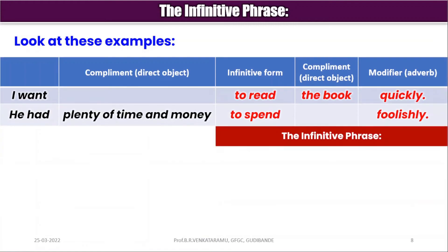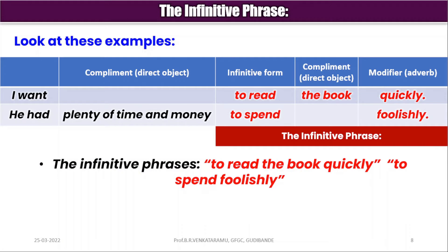Let us look at some more examples. 'I want to read the book quickly.' 'He had plenty of time and money to spend foolishly.' You can see the highlighted parts: in the first sentence, 'to read the book quickly,' and in the second sentence, 'to spend foolishly.' These two phrases are called infinitive phrases. 'To read' is the infinitive form in the first sentence; 'the book' serves as the complement or direct object; 'quickly' is an adverb serving as a modifier. In the second sentence, 'to spend' is the infinitive form, and 'foolishly' is an adverb serving as the modifier.